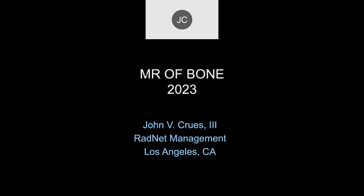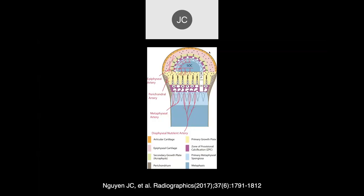Let's talk generally about bone pathophysiology and bone diseases before we go back into joints. This is a schematic of the growth part of bone, to remind you of the basic physiology of bone growth. Here's the epiphysis, the epiphyseal artery, the primary growth plate, the different cellular layers to the growth plate, and the end arteries that go down into the growth plate.